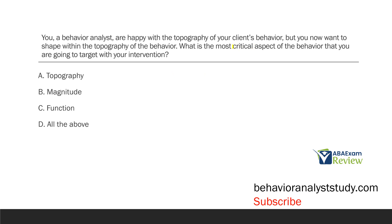We're thinking about the most critical aspect of the behavior and what intervention we're trying to use — we want to shape within the topography. When we shape, we can shape across topographies or we can shape within. When you shape across, that's what we typically think of with shaping: approximations of behavior where responses are getting closer to our terminal behavior and we're reinforcing those approximations. When you shape within topography, you've more or less reached the terminal behavior, but now you want to change an aspect of the topography.